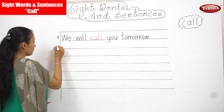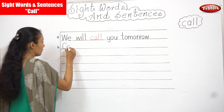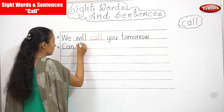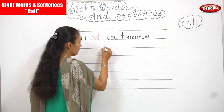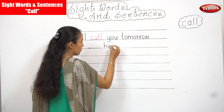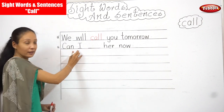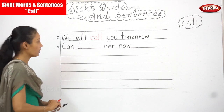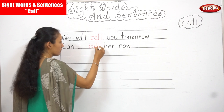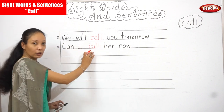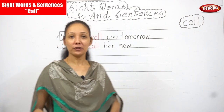The next sentence is: Can, I, dash, her, now. The dash is 'call.' If I join in the word 'call,' we will read the sentence: Can I call her now? What's the sentence? Can I call her now?